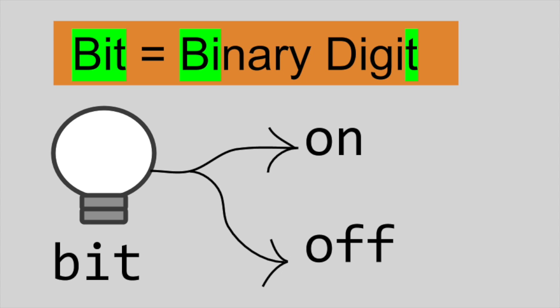In computing, a bit represents a single on or off signal inside of an electrical circuit. These on or off values are represented by the numbers one and zero, respectively.